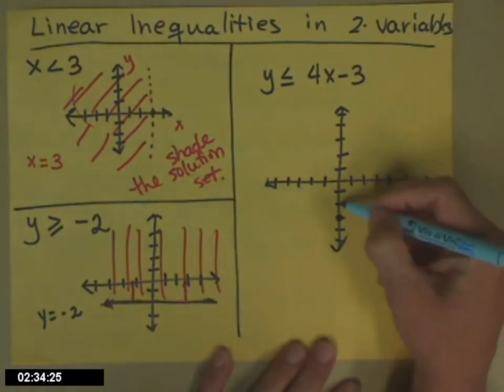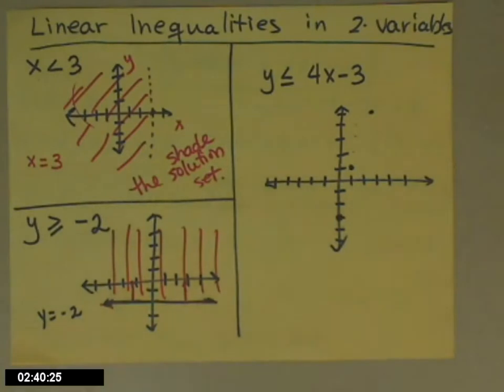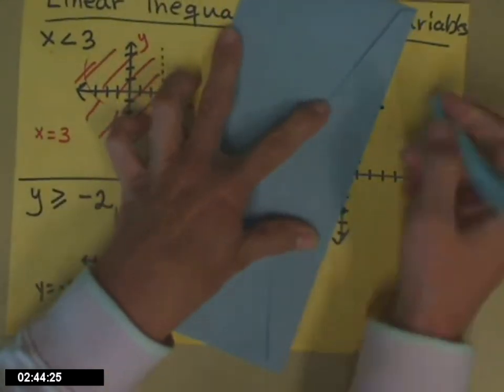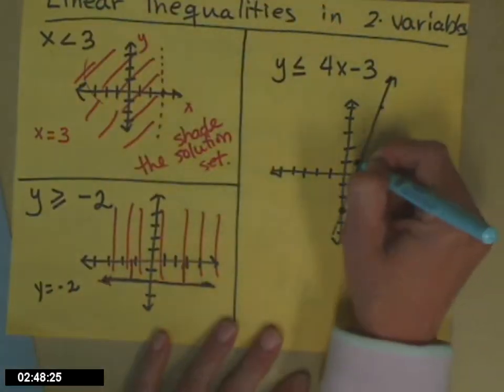So I'm going to go up 4—1, 2, 3, 4—over 1. And I'll do that one more time. And I'll get some points on my line. And it looks like I'm going to have to make one of my points a little bit bigger so they all fall. There we go.